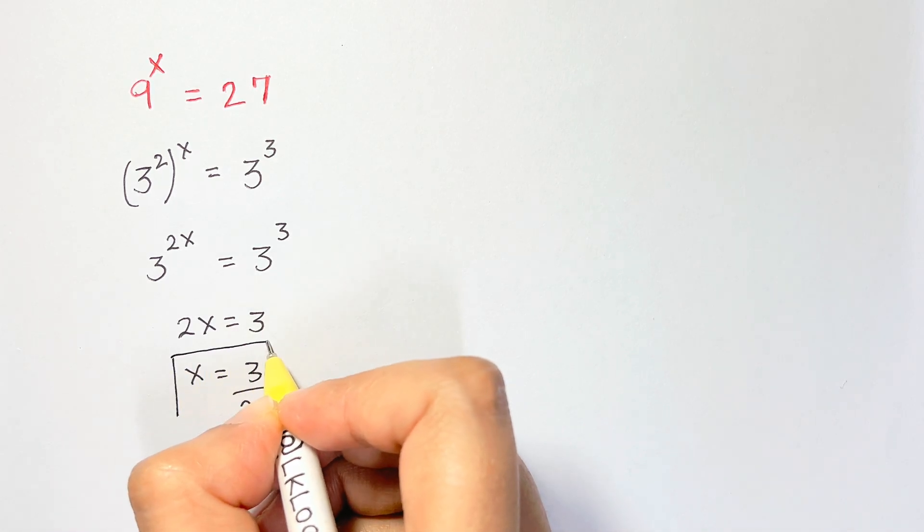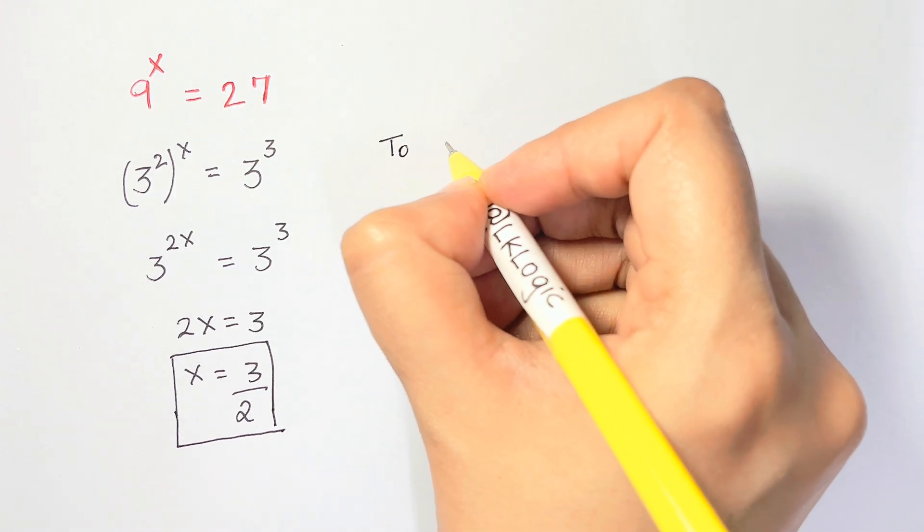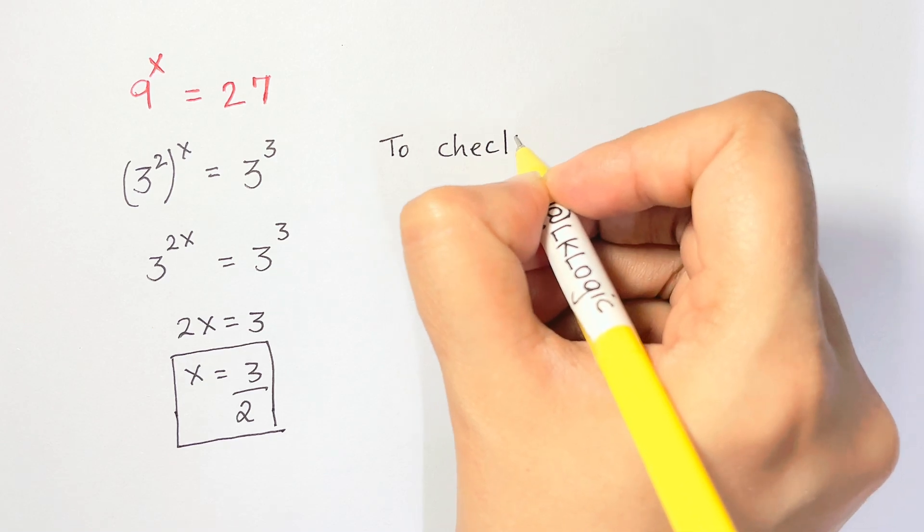So here we have the value of x, which is equal to 3 over 2. Now if we want to check, let's check if that is right or not.